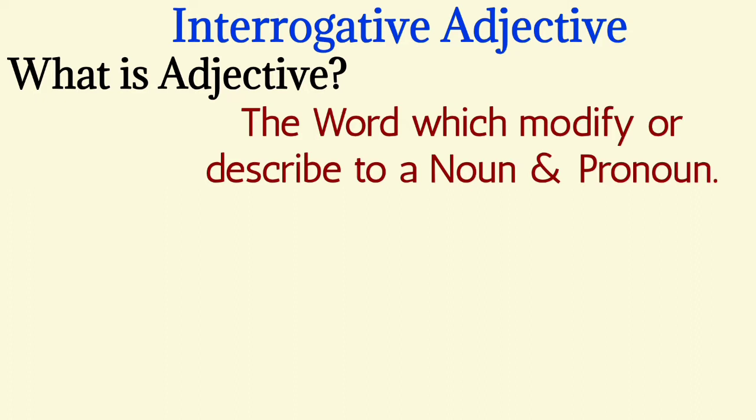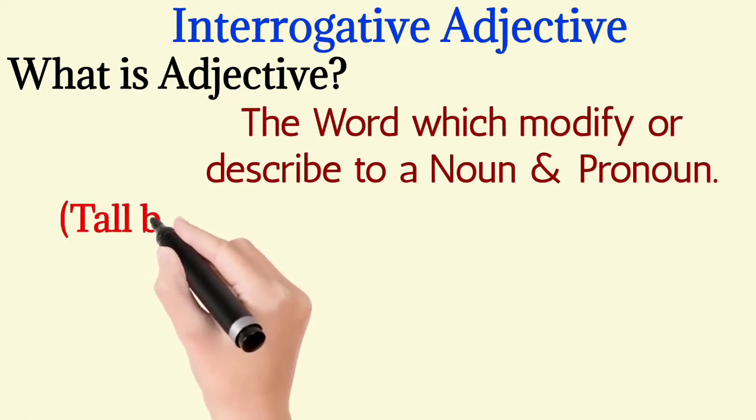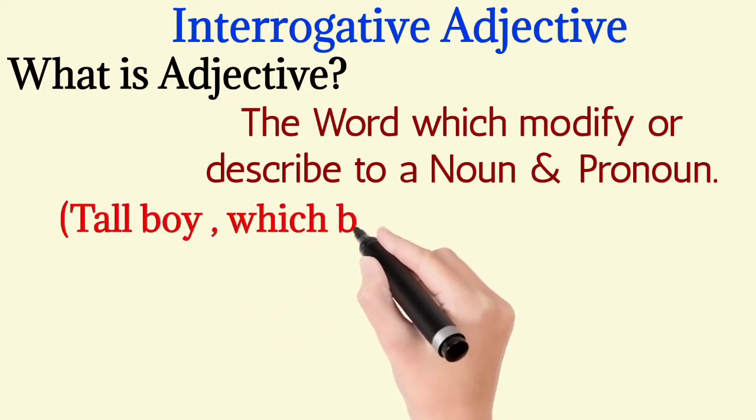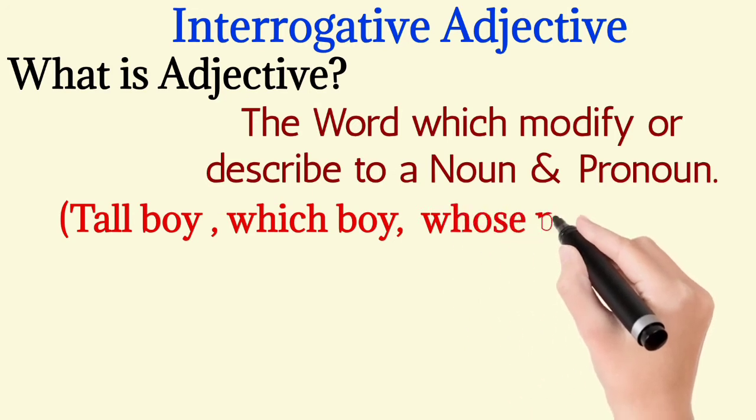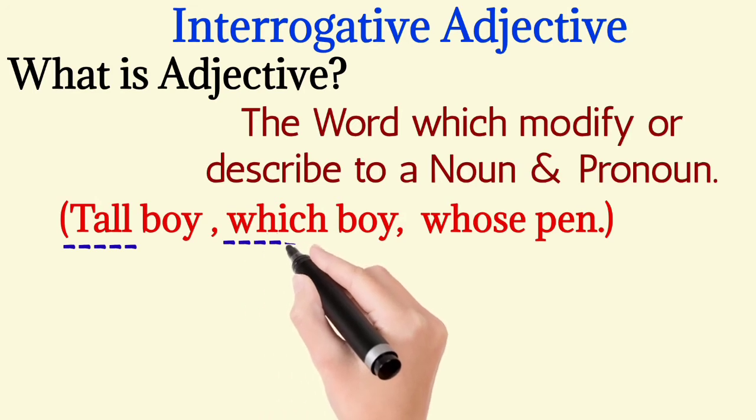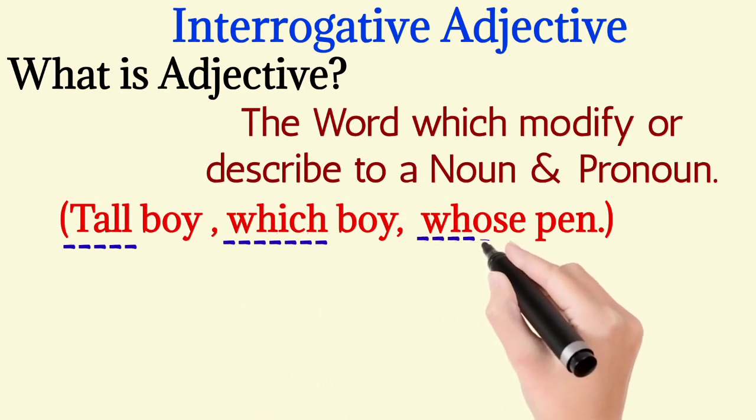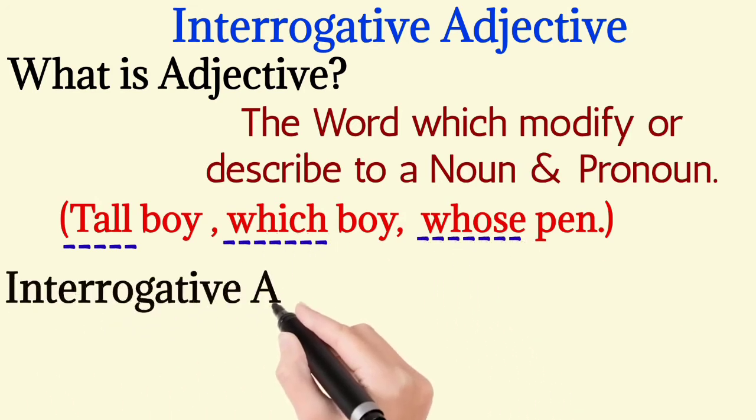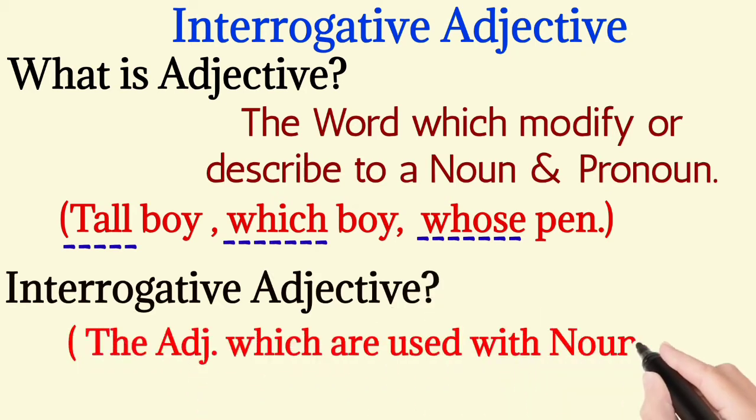Noun and pronoun ko modify kare. Examples: tall boy, which boy and whose pen. Here boy and pen are nouns, and they are modified by tall, which and whose. This is called adjective.